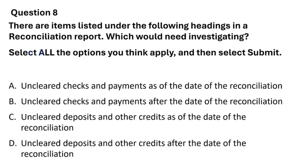There are items listed under the following headings in a Reconciliation Report — which would need investigating? Select all the options you think apply, and then select Submit. A. Uncleared checks and payments as of the date of the Reconciliation. B. Uncleared checks and payments after the date of the Reconciliation. C. Uncleared deposits and other credits as of the date of the Reconciliation. D. Uncleared deposits and other credits after the date of the Reconciliation.